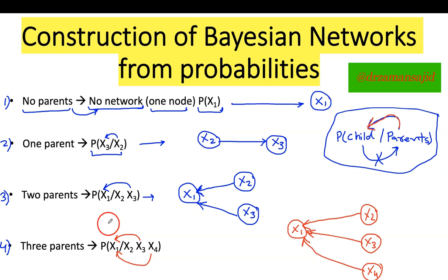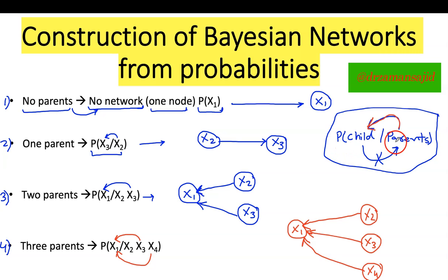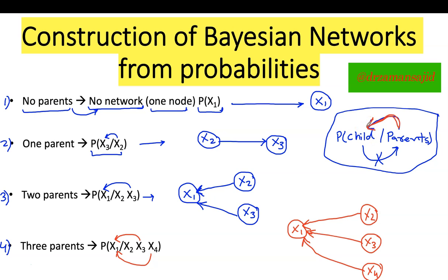In the next lecture I will explain how we validate our Bayesian network when probabilities are given. Just remember this formula: probability of child given parents. Parents can give birth to the child only — the child cannot give birth to their parents. This is the direction to consider when developing links between nodes. I hope it is clear — you can email me if you have any questions. Thank you.